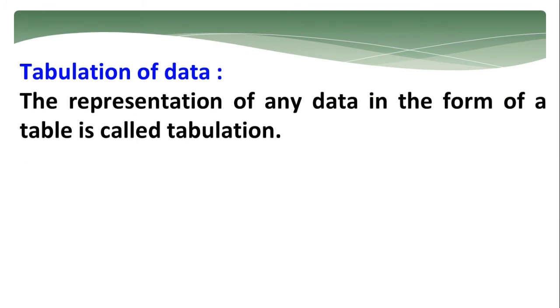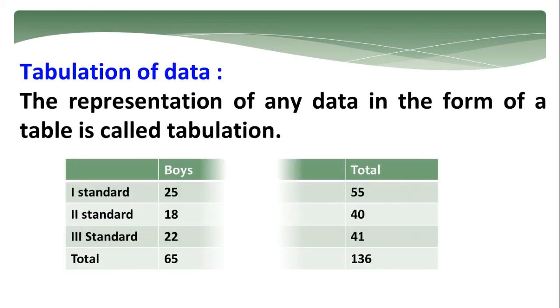Next one is the tabulation of data. Any data, if it is represented in the table form, it is called as tabulation. There are many certain cases which we are going to come across in our daily life. For example, the number of students, boys and girls in the school, first standard, second standard and third standard. If this data is represented in the table form, we call it as tabulation of data. That is, the given data is written in the form of rows and columns, which is easy to access and note down.